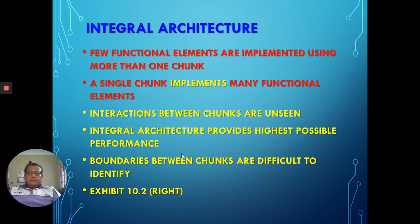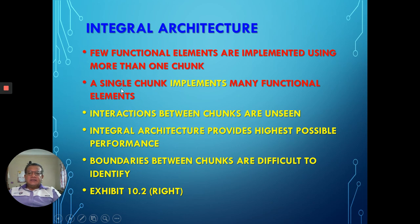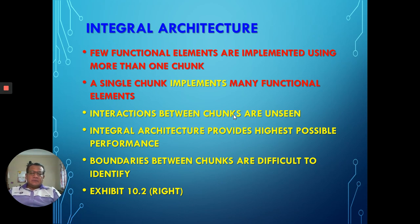The second type of architecture is called integral — derived from integrated. Integral architecture means that a few functional elements are implemented using more than one chunk or block. A few blocks are put together to execute a certain functional element. A single chunk implements many functional elements — one single chunk can execute several functions.